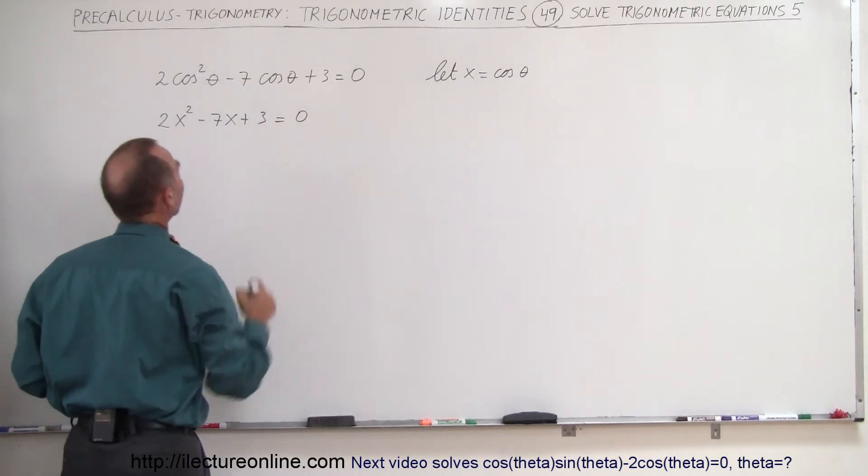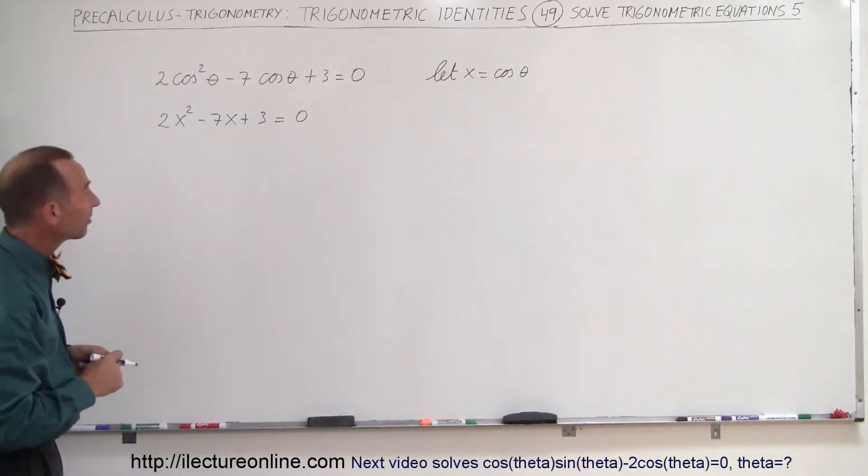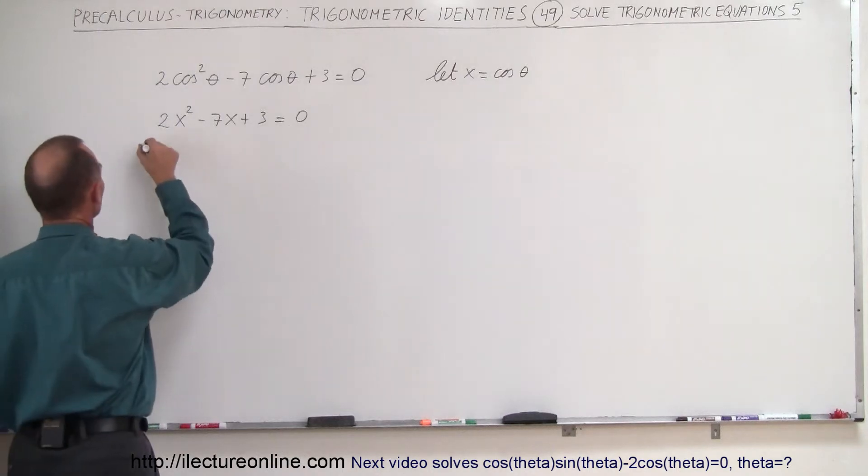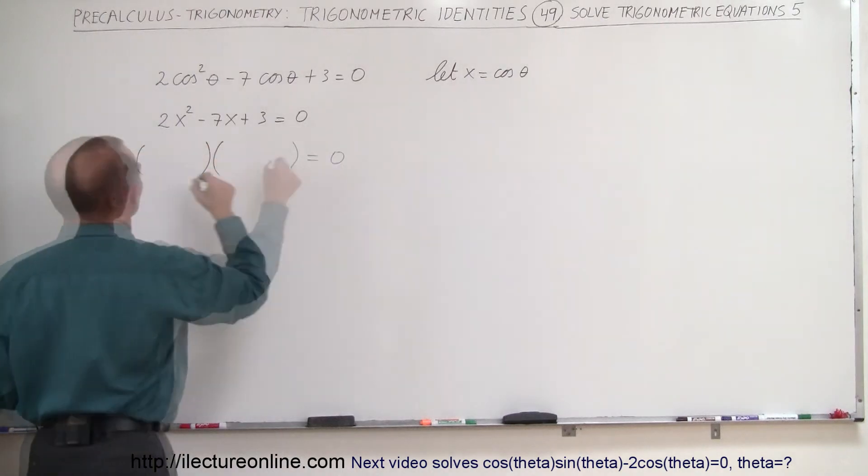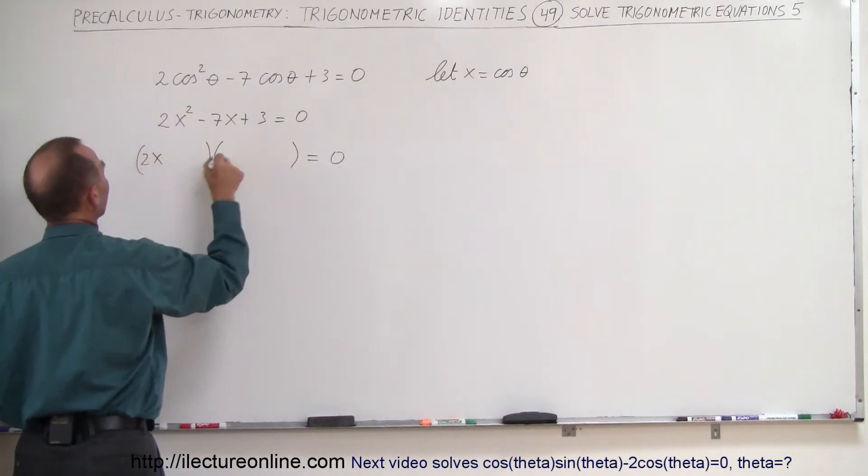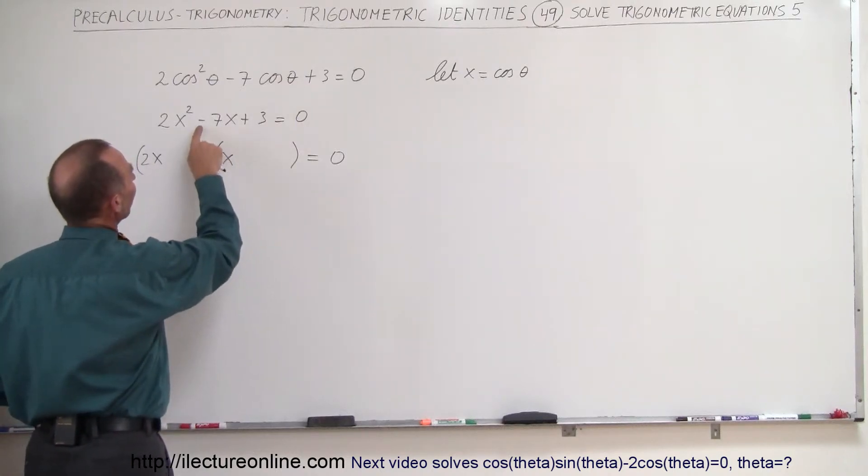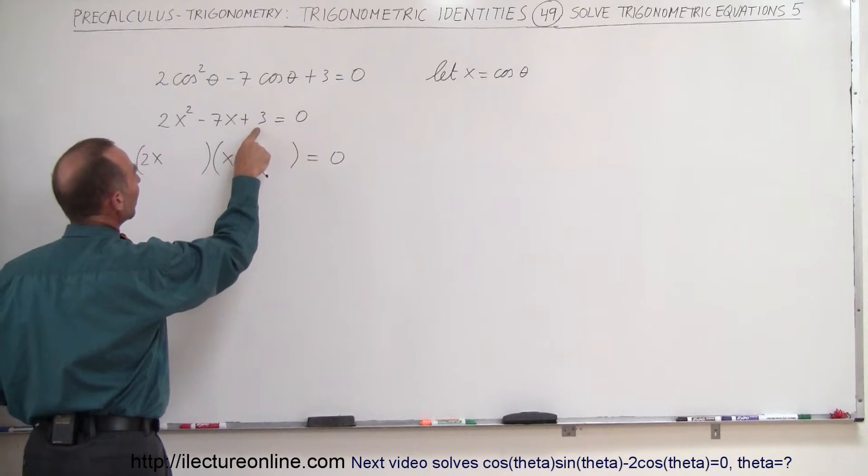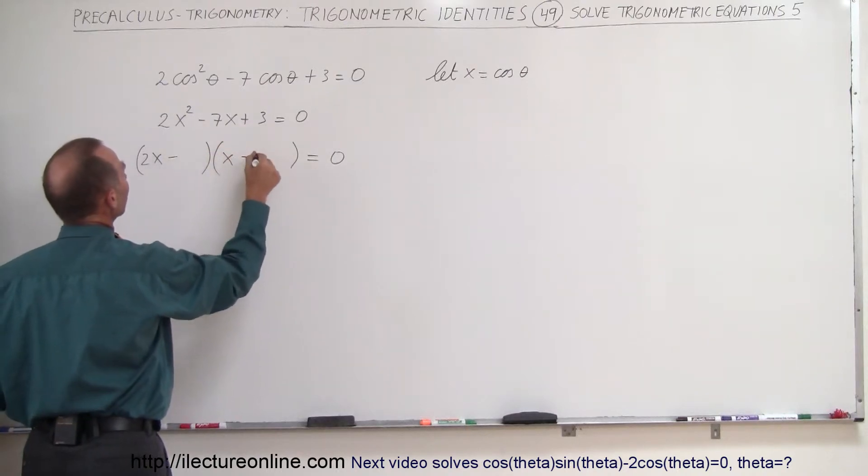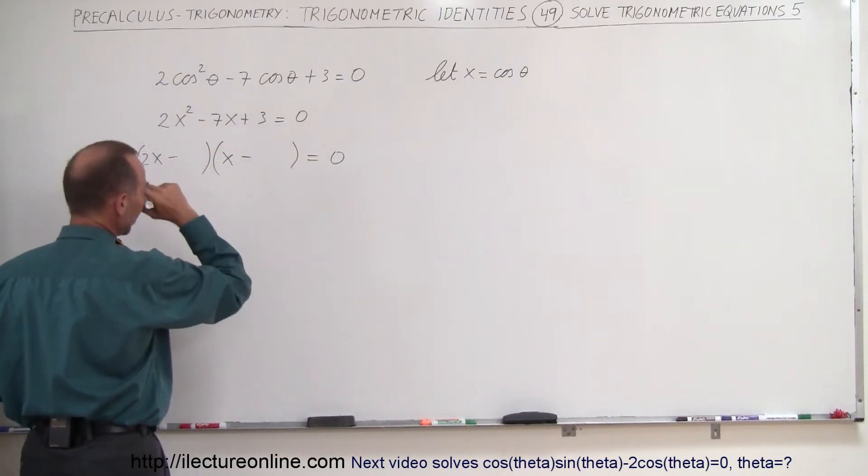Let's see if we can solve this equation for x. We can probably factor that, so if we can, it should look like this. So we end up with a 2x and an x. It looks like we're going to have two negative signs, because if this is negative and that's positive, that needs to be negative and negative, and it can only be 3 and 1.